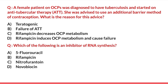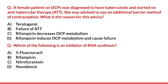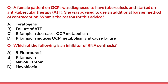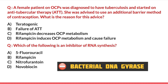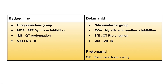Fourth question: 'Which of the following is an inhibitor of RNA synthesis?' Looking at the other options: 5-fluorouracil is a thymidylate synthase inhibitor — ruled out. Nitrofurantoin causes reactive metabolites that damage DNA — not RNA synthesis inhibition. Novobiocin inhibits bacterial DNA gyrase — again not RNA synthesis. Therefore, the best answer is rifampicin, which is an inhibitor of RNA polymerase and thus RNA synthesis — a direct, straightforward question.